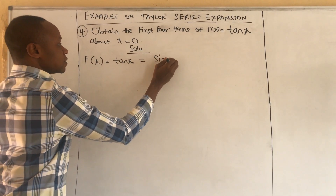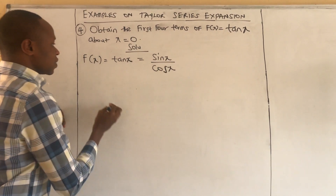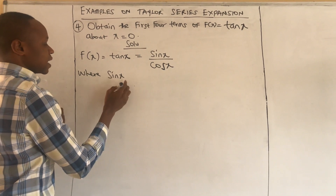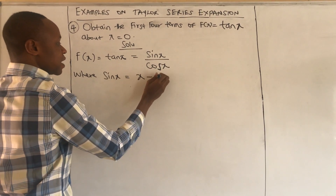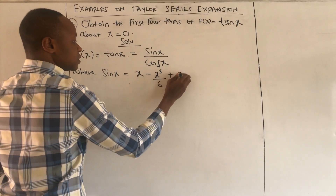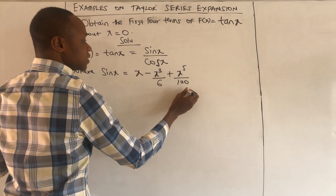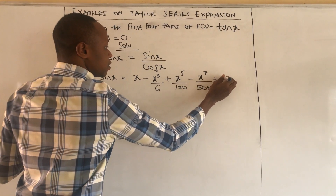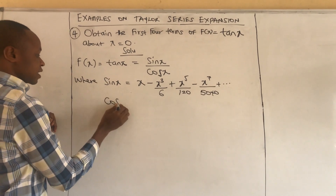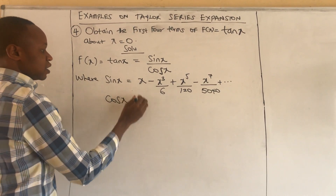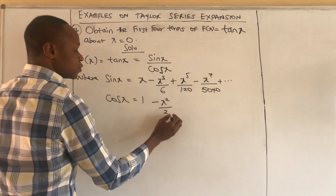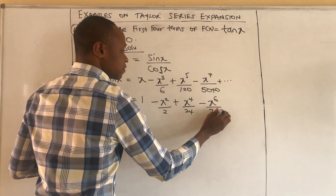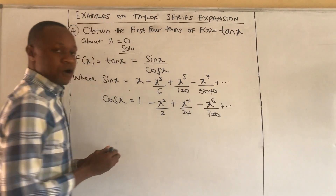We rewrite this function as sin(x) over cos(x). Recall that the series expansion of sin(x) about zero gives: x − x³/6 + x⁵/120 − x⁷/5040 with other terms. The series expansion of cos(x) about zero gives: 1 − x²/2 + x⁴/24 − x⁶/720 with other terms.